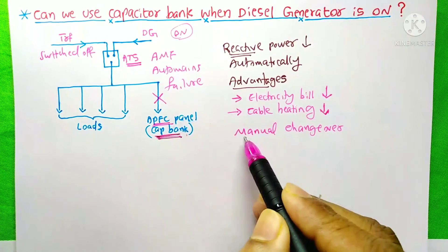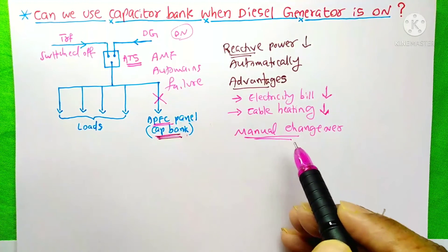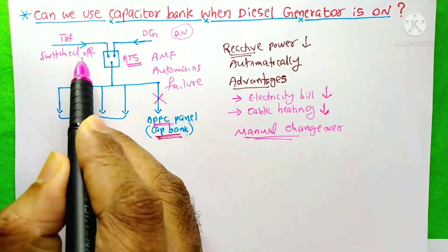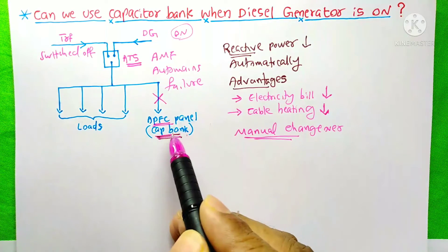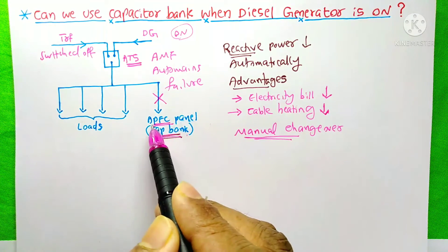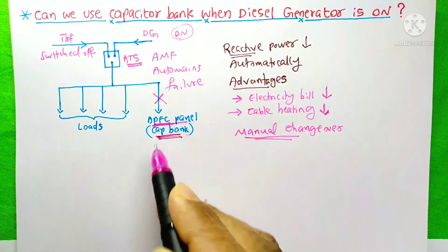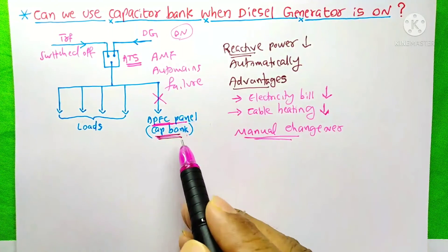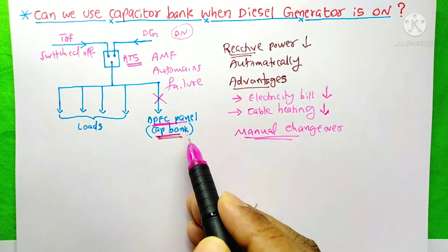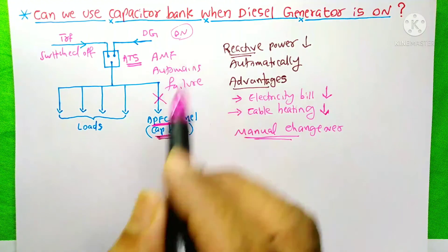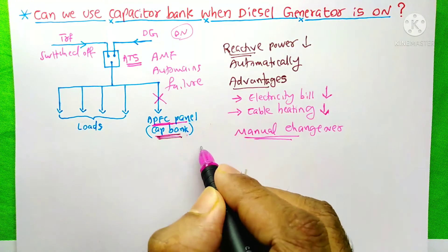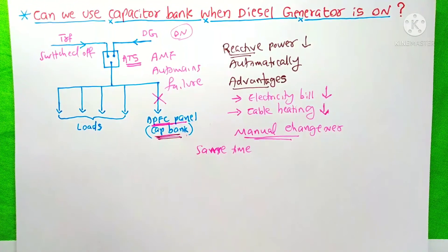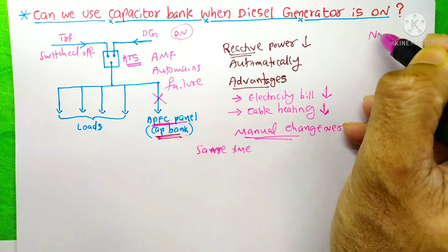If we have a manual changeover switch, then at any point the capacitor bank should be switched off before the DG is turned on. That means both the capacitor bank and the DG should not be on at the same time. So I hope you have understood this topic, and the answer to this question is NO.